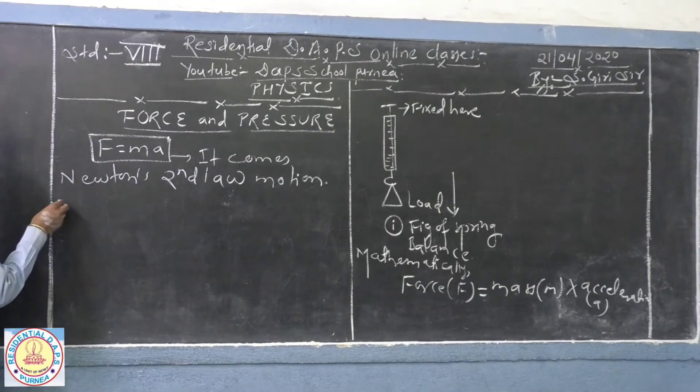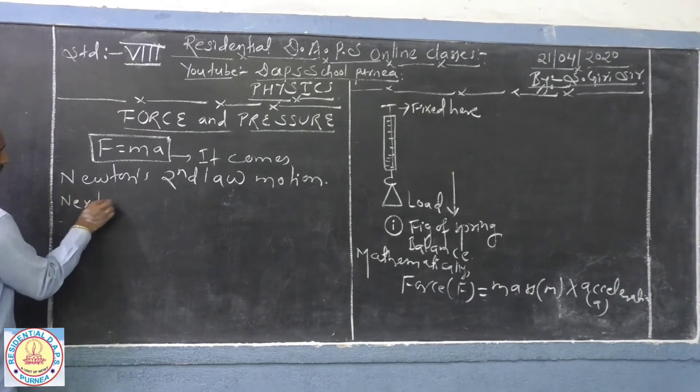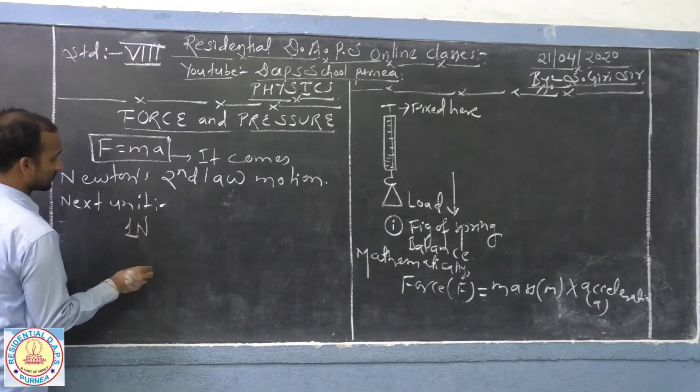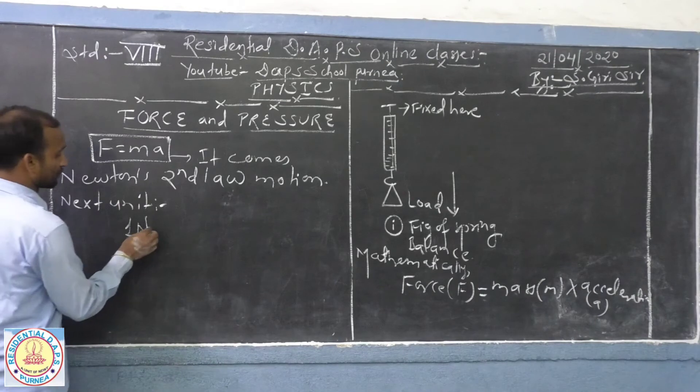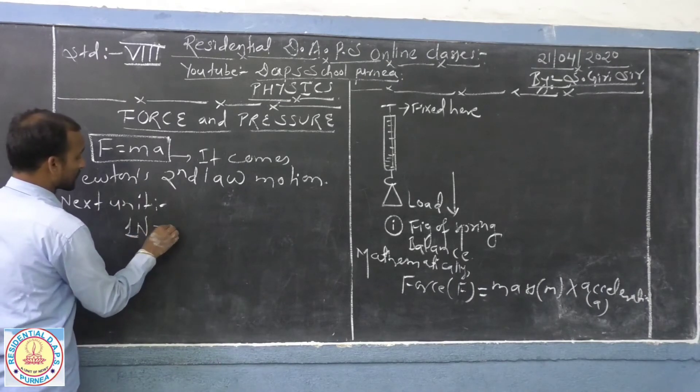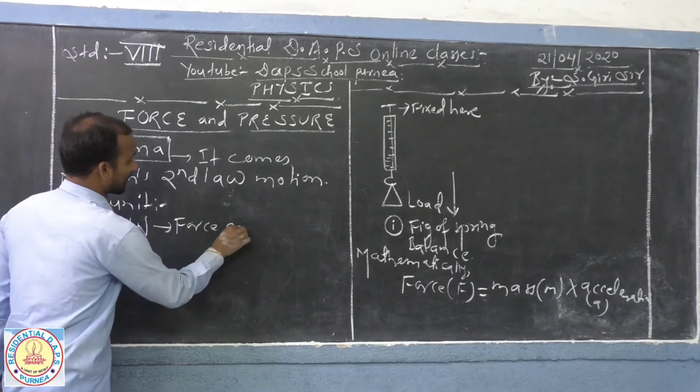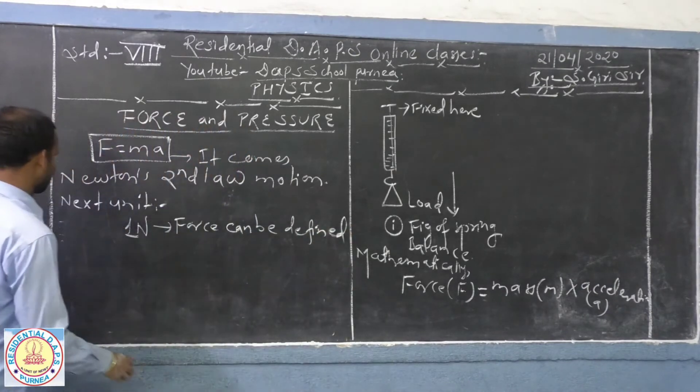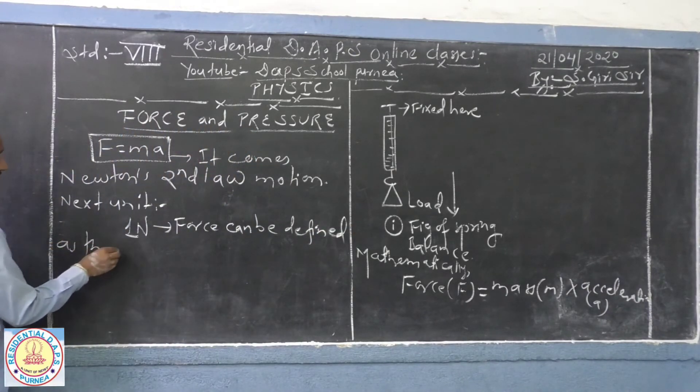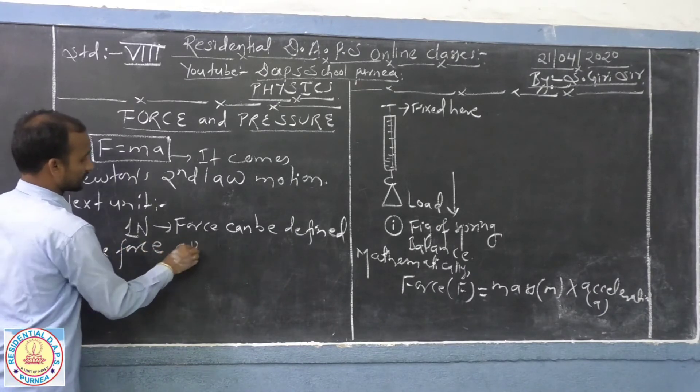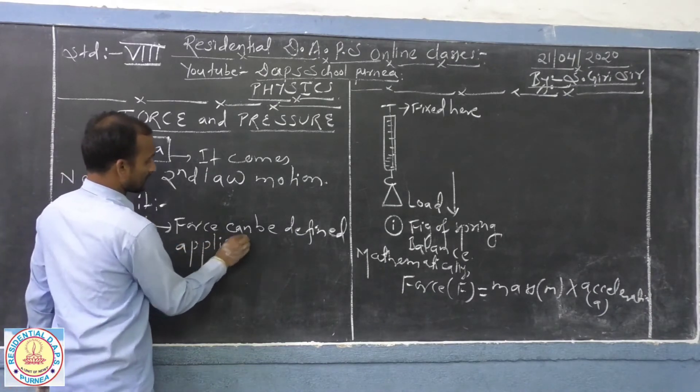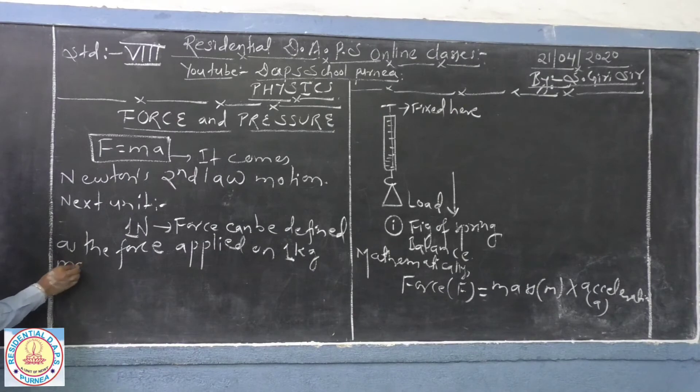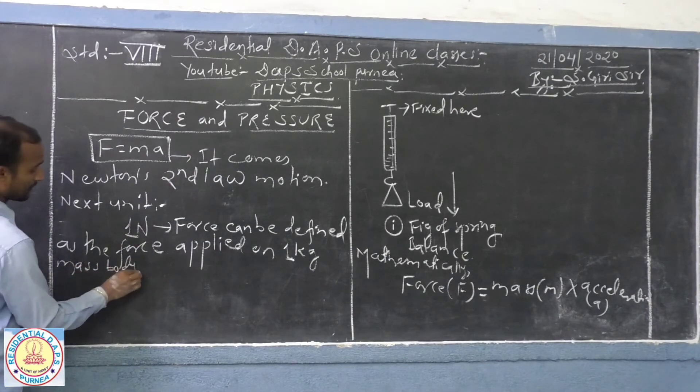Now, next unit from your book - it is given here, how to define one Newton force. One Newton force can be defined as the force applied on one kg mass body producing one meter per second square acceleration.